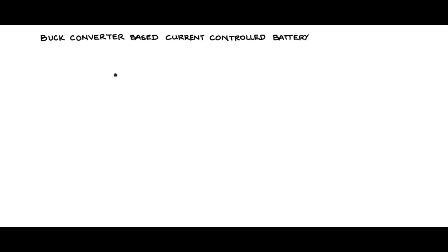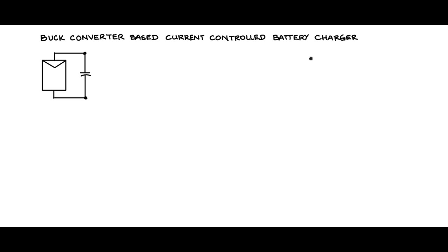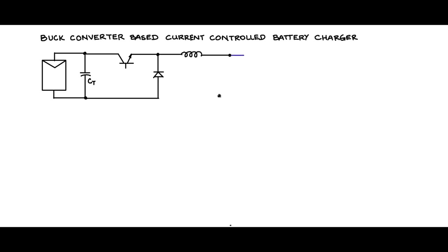Let me draw and discuss the schematic for a buck converter based current controlled battery charger. The PV module or PV array is interfaced with a buck converter to charge the battery. The PV panel is connected to a buffer capacitor CT at the terminals, followed by a buck converter consisting of a BJT switch — which can be replaced with a MOSFET or IGBT — followed by a diode and an inductor. Instead of placing a capacitor after the inductor, I will connect a battery directly.